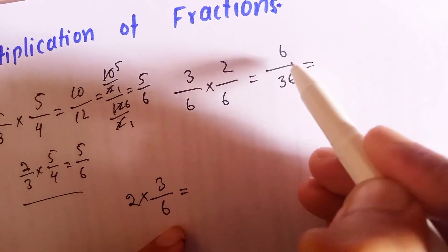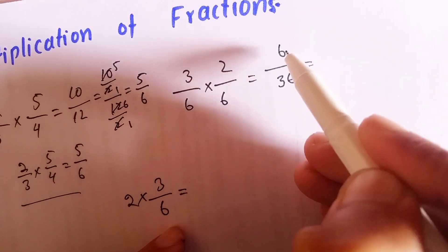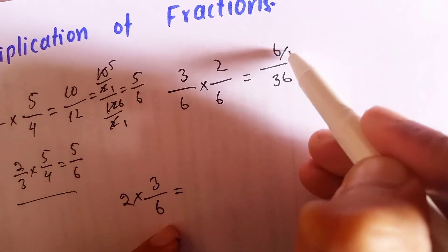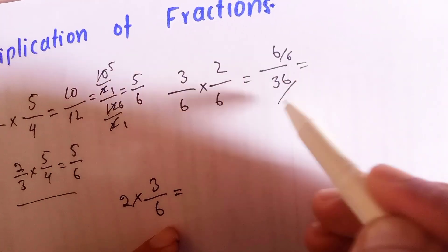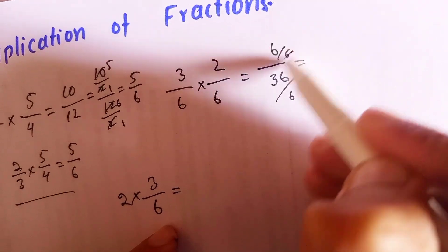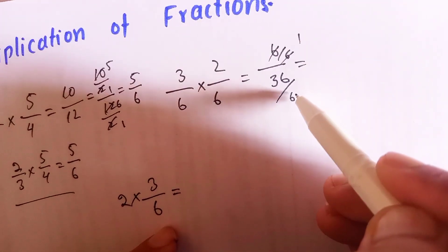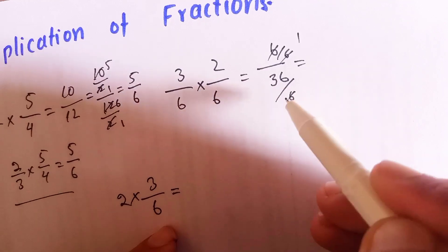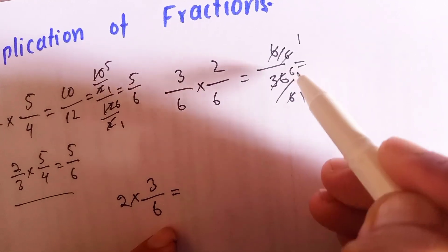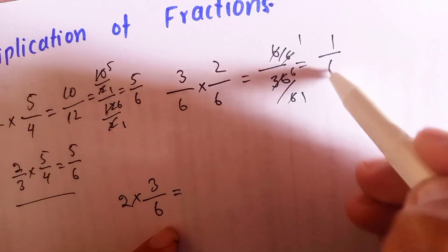Three times two is six, and six times six is thirty-six. We can divide both the numerator and denominator by the common factor, which is six. We divide six by six and thirty-six by six. Six divided by six equals one, and thirty-six divided by six equals six, so the answer is one over six.